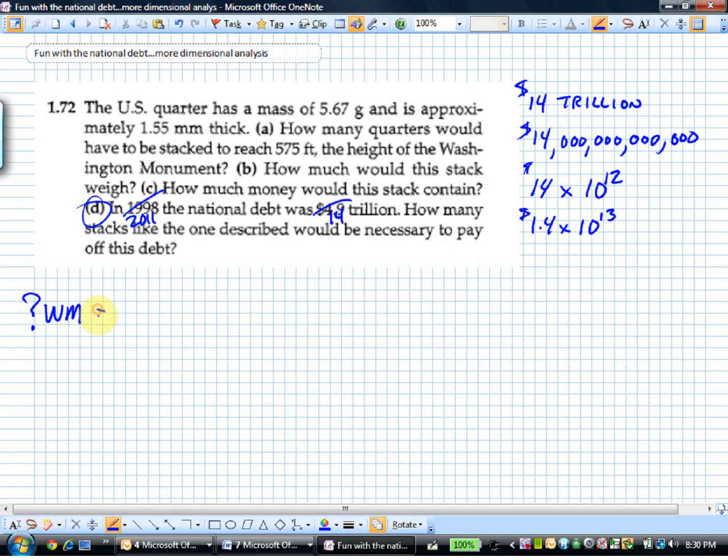What's the question? How many Washington Monuments of quarters do we need to equal our national debt of 1.4 times 10 to the 13th dollars? I want Washington Monuments as a unit, I've got dollars.